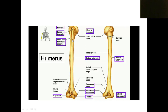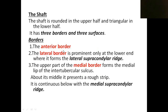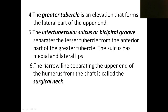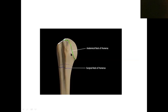The area where the upper end connects to the shaft is known as the surgical neck of the humerus. So the features of the upper end are: head, anatomical neck, lesser tubercle, greater tubercle, intertubercular sulcus, and surgical neck.